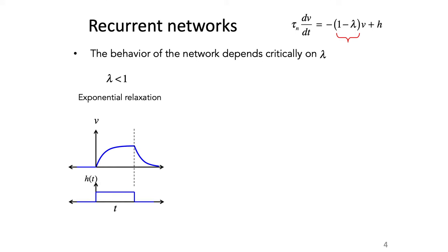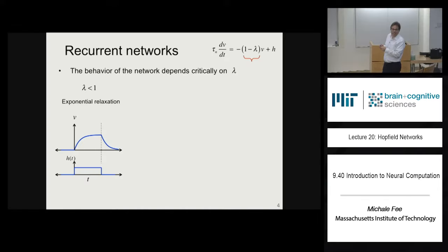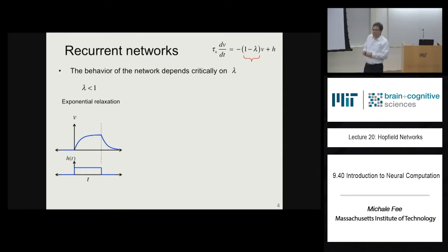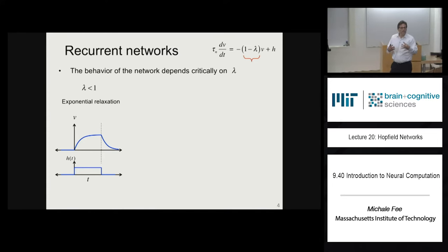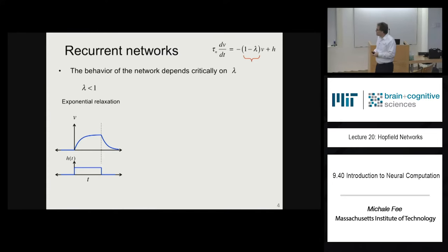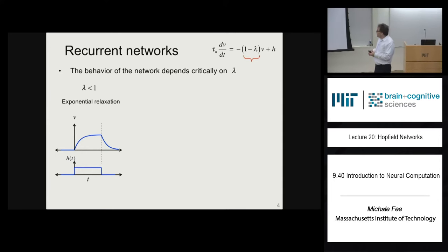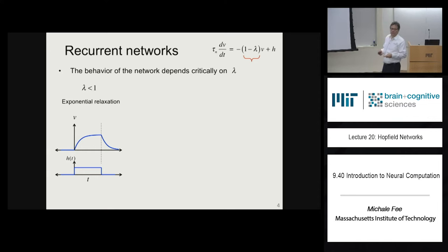When lambda is less than 1, the coefficient in front of v is negative, meaning the firing rate of the neuron relaxes exponentially toward some v-infinity. When the input goes away, the firing rate decays exponentially back toward 0.